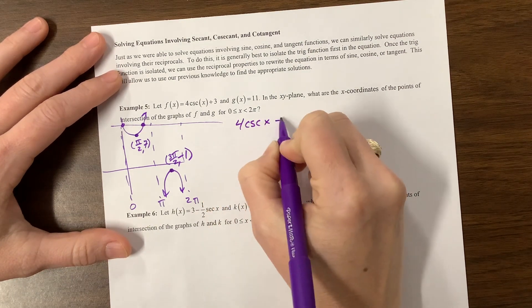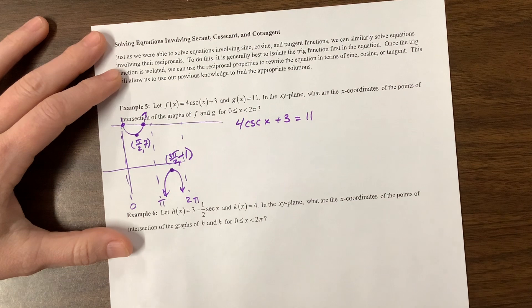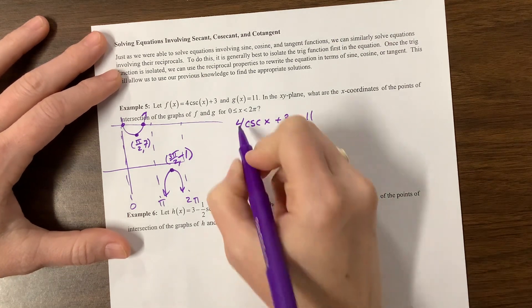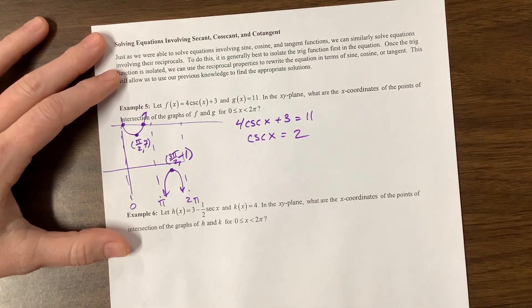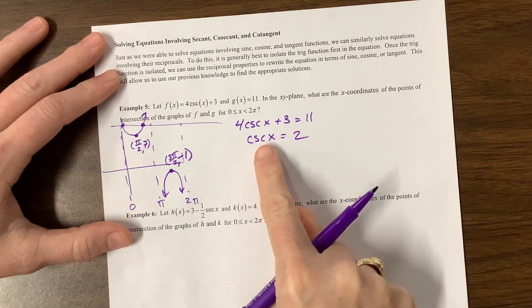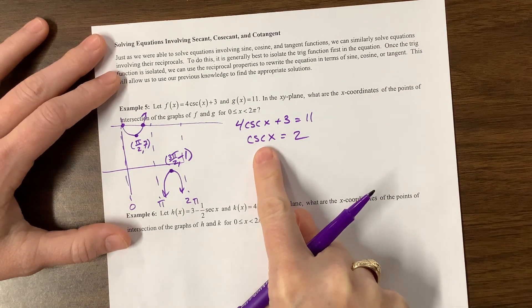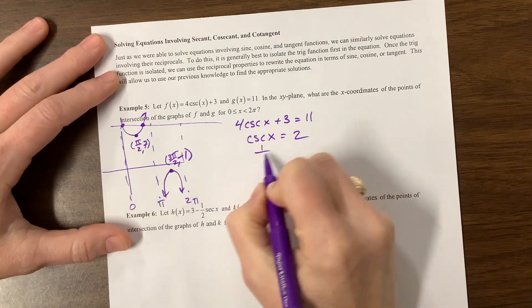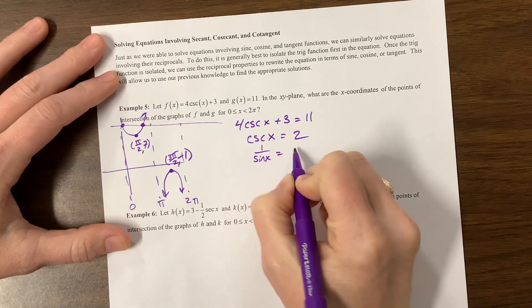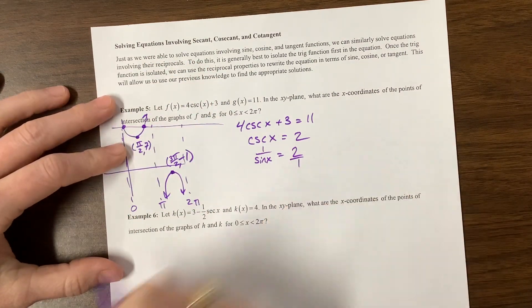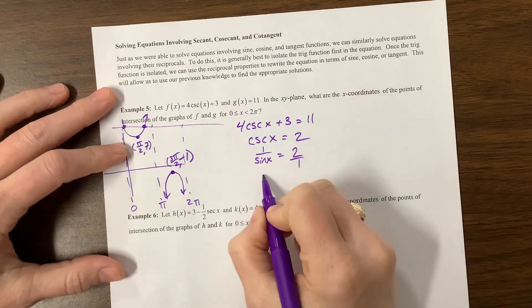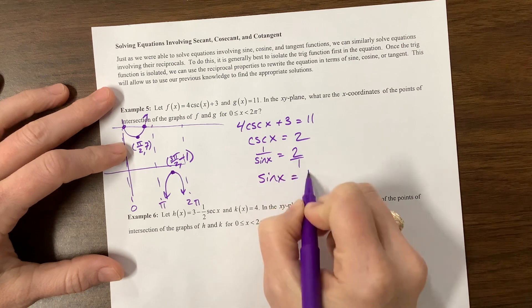So 4 cosecant of x plus 3 equals 11. I'm going to subtract 3, get 8, divide by 4, and get 2. So cosecant of x is equal to 2. You'll remember cosecant is sine's buddy, so the reciprocal of cosecant. So if it helps you, you can write this.